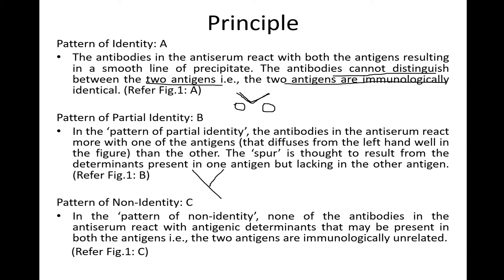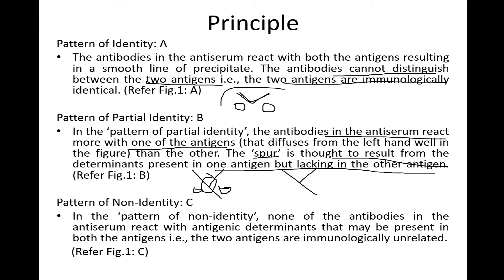The second pattern is the Y-shaped line. In this case, the antibodies in the antiserum react with more than one type of antigen and a spur is formed. This spur results from determinants present in one antigen but lacking in the other — one antigen is recognized by the antiserum but the other is not. Both antigens are not identical, and the antiserum can recognize the first antigen but cannot recognize the second, resulting in spur formation.